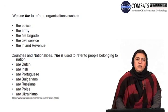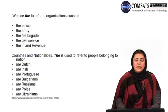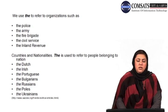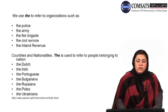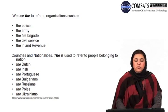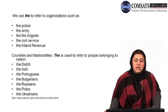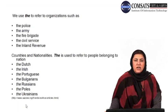When it comes to countries and nationalities, 'the' is used to refer to people belonging to that nation: the Dutch, the Irish, the Portuguese, the Bulgarians, the Russians, the Poles and the Ukrainians. When the nationality is mentioned, 'the' is used before the name indicating nationality. So: Ireland but the Irish; Russia but the Russians; Pakistan but the Pakistanis. When the names of countries are used, we do not use article 'the'. But when nationalities are referred to, 'the' is placed before the nationality.